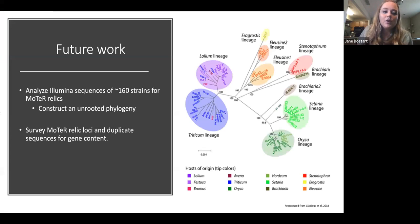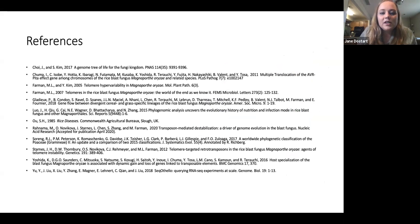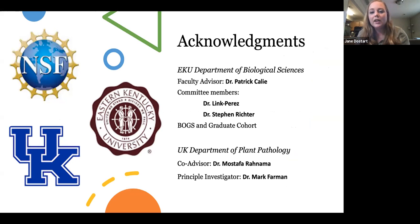And that leads me into my future work where I want to, if I have time, survey MoTeR relic loci and duplicate sequences for gene content. And then also for my other objective of my thesis, I will be analyzing Illumina sequences of about 160 strains for MoTeR relics. And from that, I want to construct an unrooted phylogeny and see if that tracks the true phylogeny of these strains in this single species. These are my references. And I want to quickly thank Dr. Pat Calie for all of his help and support, my committee members, Boggs and the graduate cohort, especially my co-advisor, Dr. Rahnama, and then also the principal investigator of this study, Dr. Mark Farman. And thank you for your attention and time.